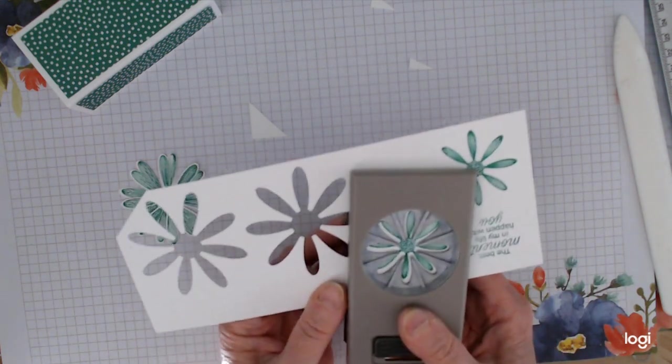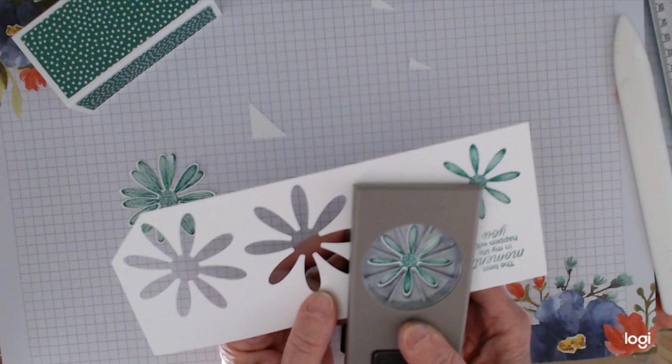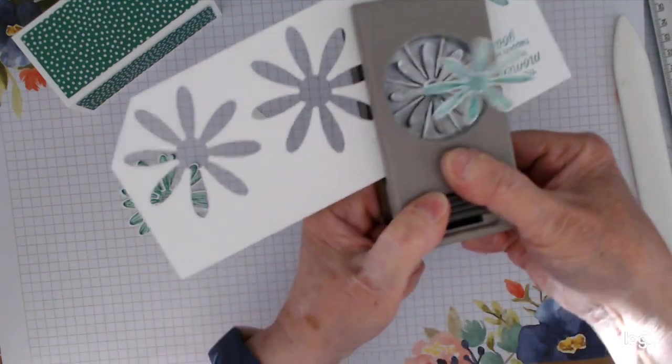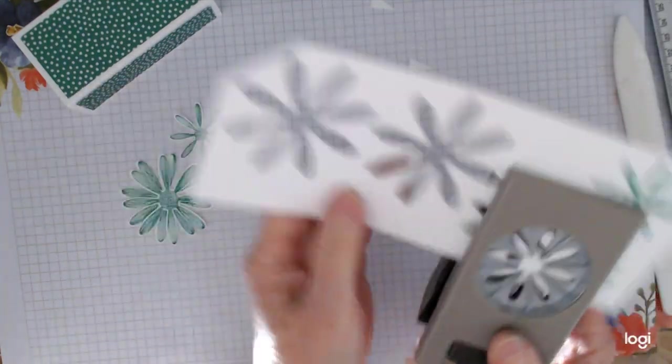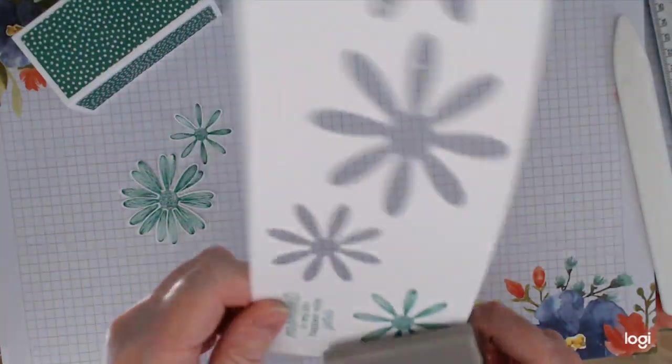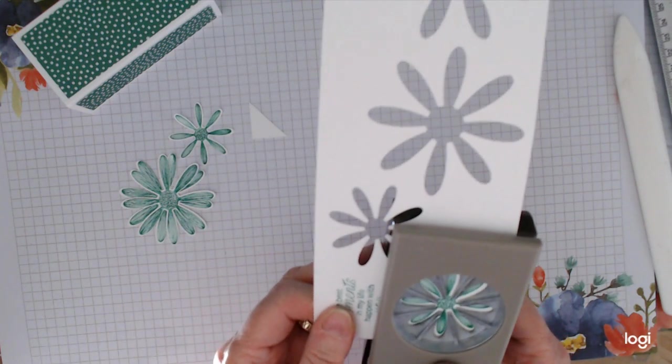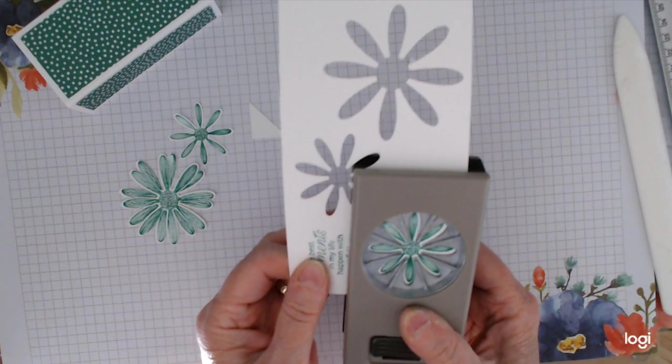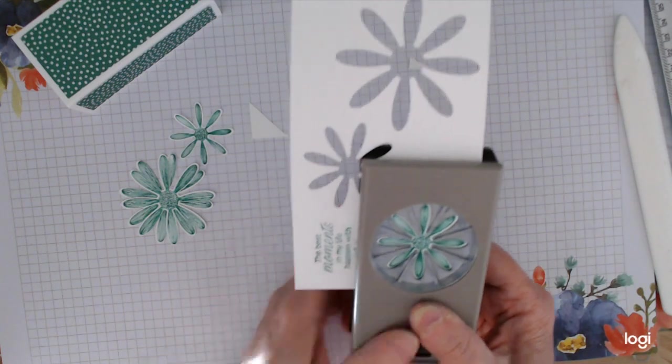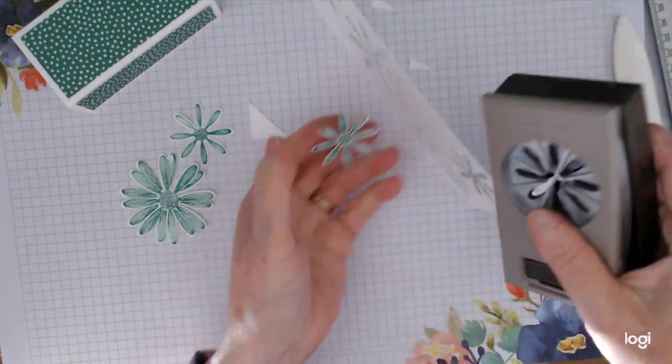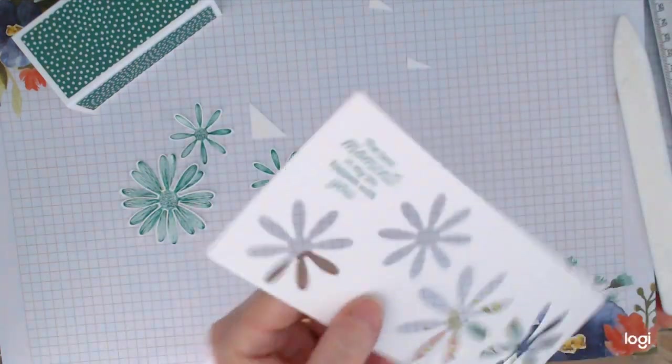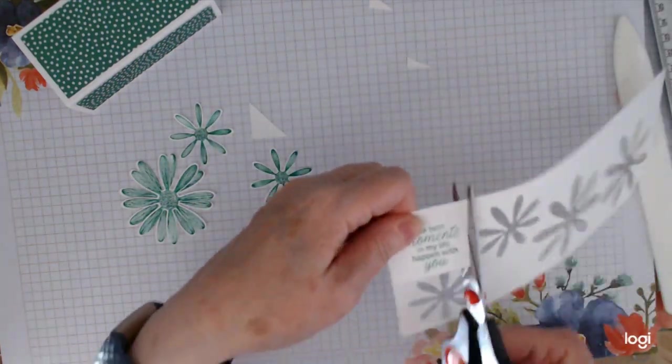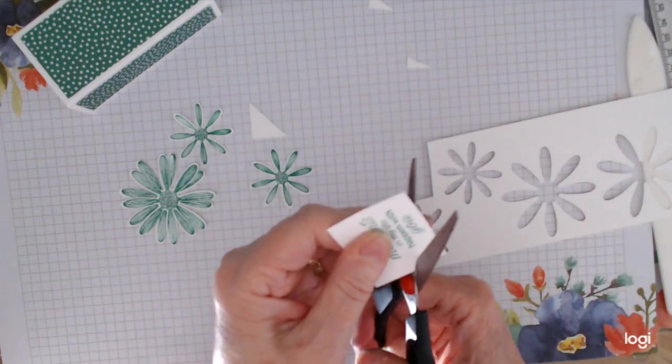And then use your smaller punch for these ones. If you can catch the line up. It's so much quicker than—I may have hand-cut flowers loads of times and I don't mind actually doing it, but if you do, the punches are great.